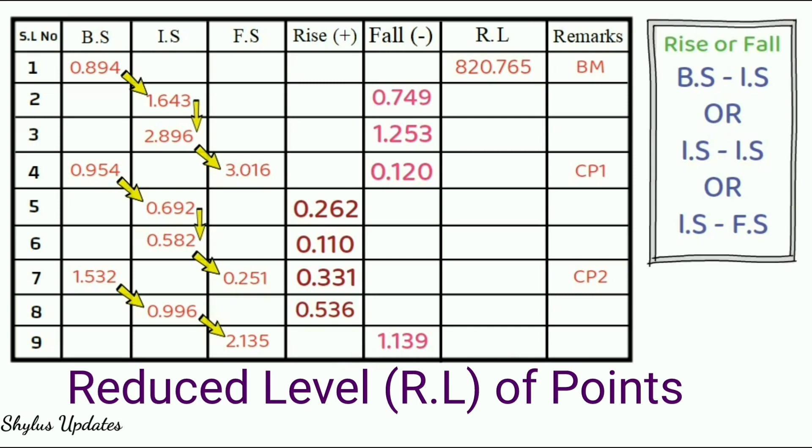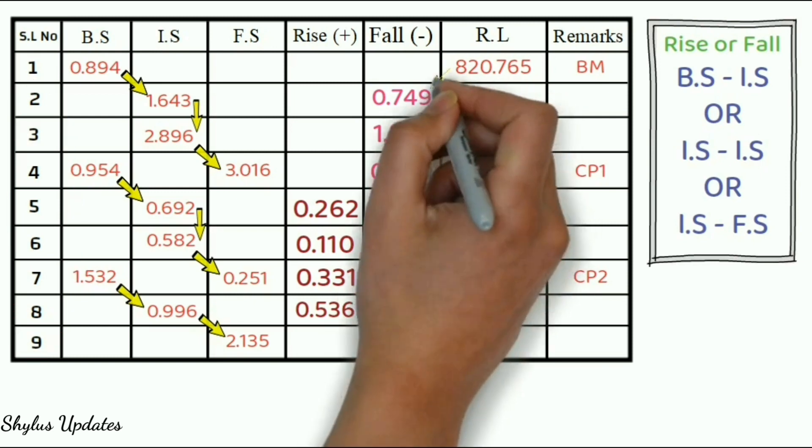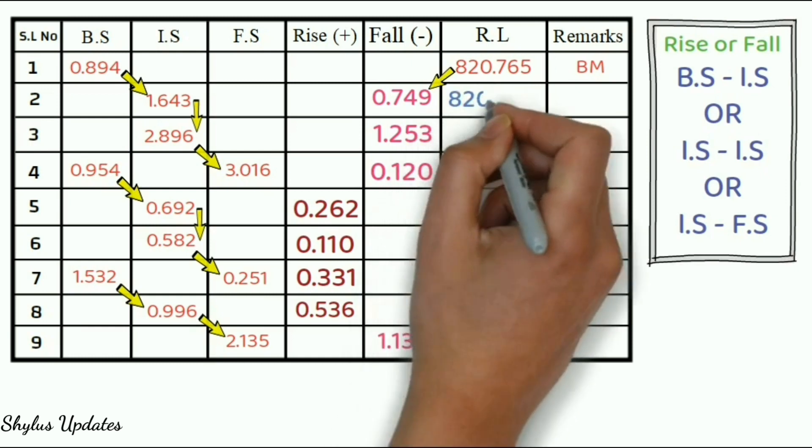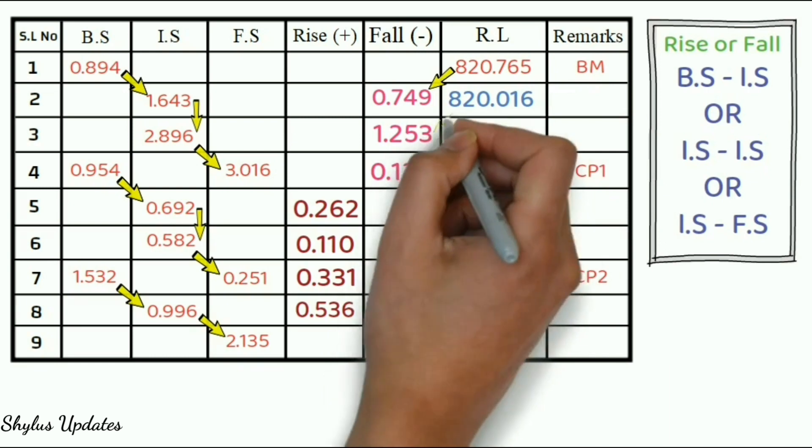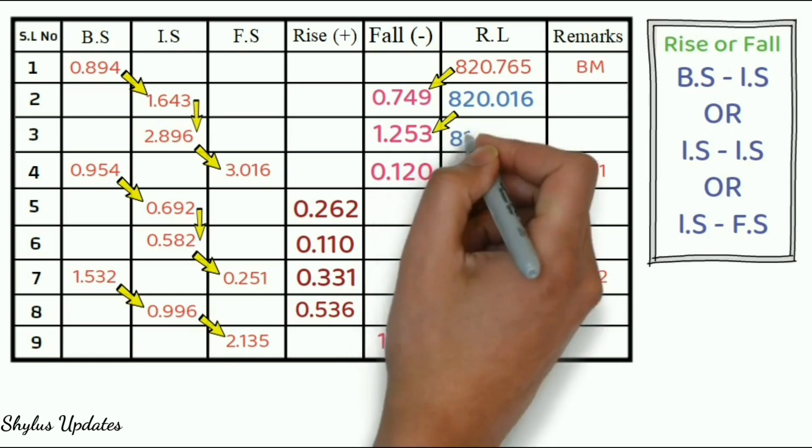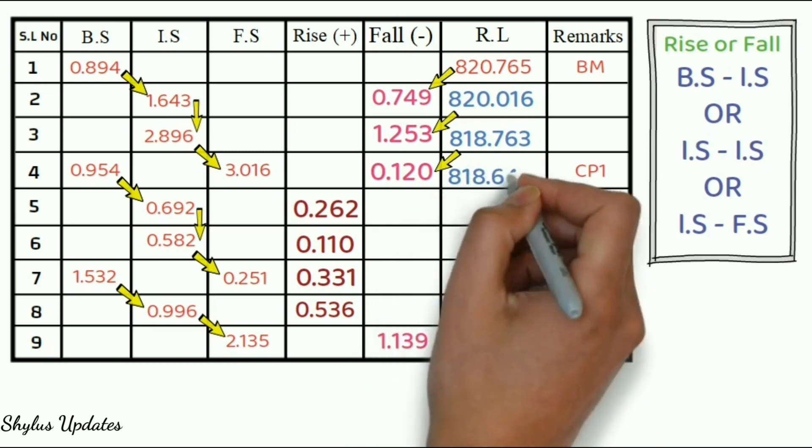Last step is to find reduced level of points. Reduced level RL of first point has been given in the question as 820.765 meter. Let's find reduced level RL of remaining points. Fall means, obviously, you have to subtract. So, 820.765 minus 0.749 is 820.016. Next, 820.016 minus 1.253. We will get 818.763. Next, 818.763 minus 0.120. We will get 818.643.